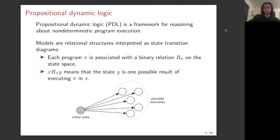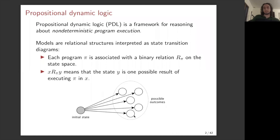Models for propositional dynamic logic are relational structures or Kripke structures, interpreted as state transition diagrams. You have a set of states, and each program is associated with a binary relation — so each program π is associated with a binary relation R_π on the state space. An edge between states, say from state x to state y, means y is one possible result of executing program π in state x. Because it's a relation and not a function, there can be multiple possible results of executing a program, which is why it models non-deterministic program execution.